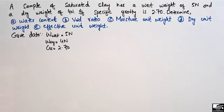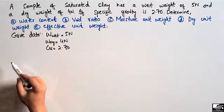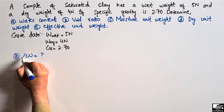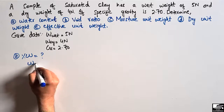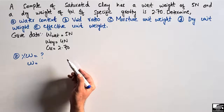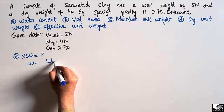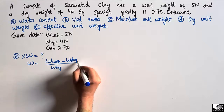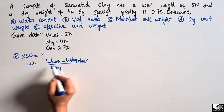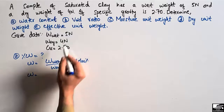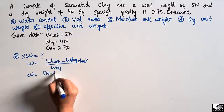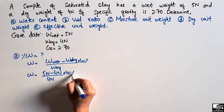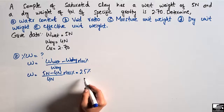We start with the first unknown: water content or moisture content, which is always expressed in percentage. The formula is: water content = (wet weight − dry weight) / dry weight × 100%. So that is (5 − 4) / 4 × 100% = 25%. The moisture content for this soil sample is 25%.